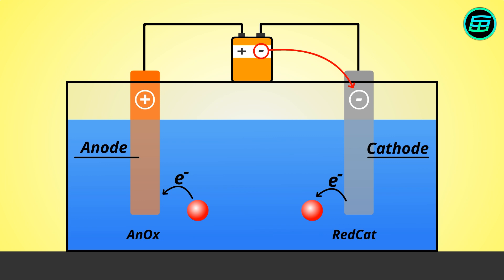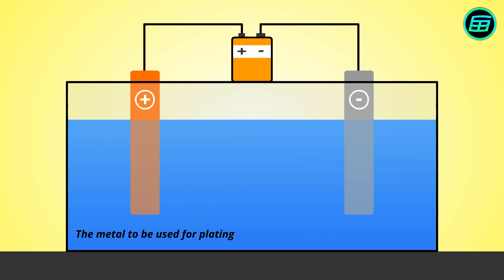The metal to be used for plating must be connected to the anode, whereas the metal to be plated must be connected to the cathode.